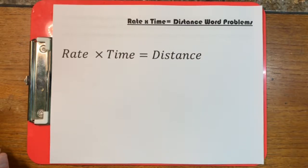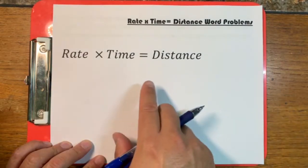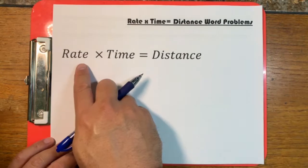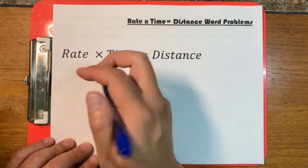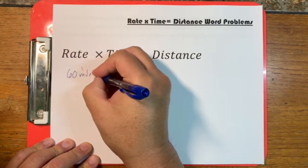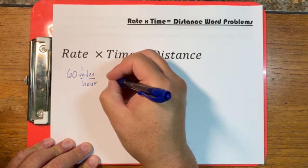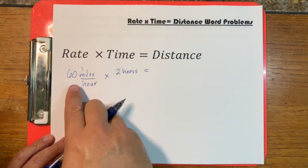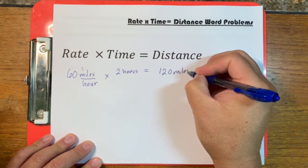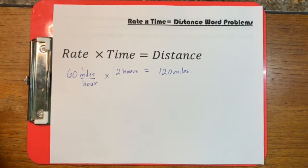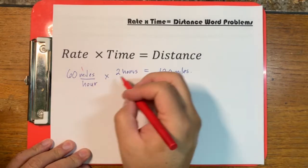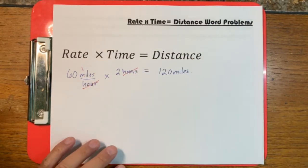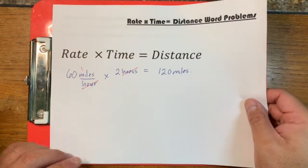In this video we're going to work on how to solve rate times time equals distance word problems — problems that have to do with speed or velocity. We use this formula all the time intuitively. Rate means speed. If I say I'm traveling on the freeway 60 miles per hour and I travel for two hours, how far did I go? We just multiply the two. These two units cancel each other out. Now let's see how we use this formula formally in an algebra problem.